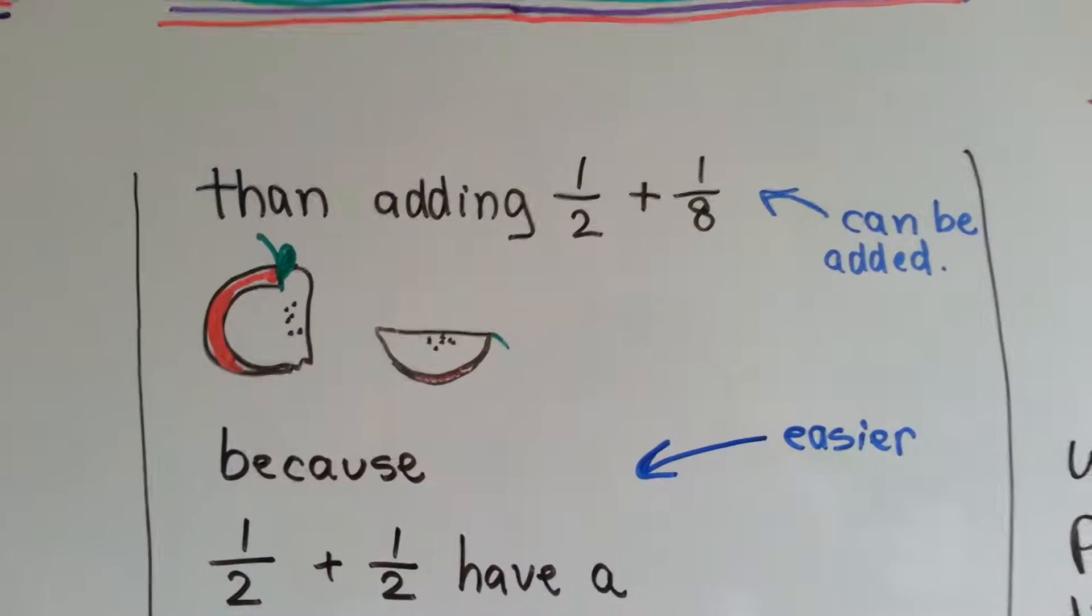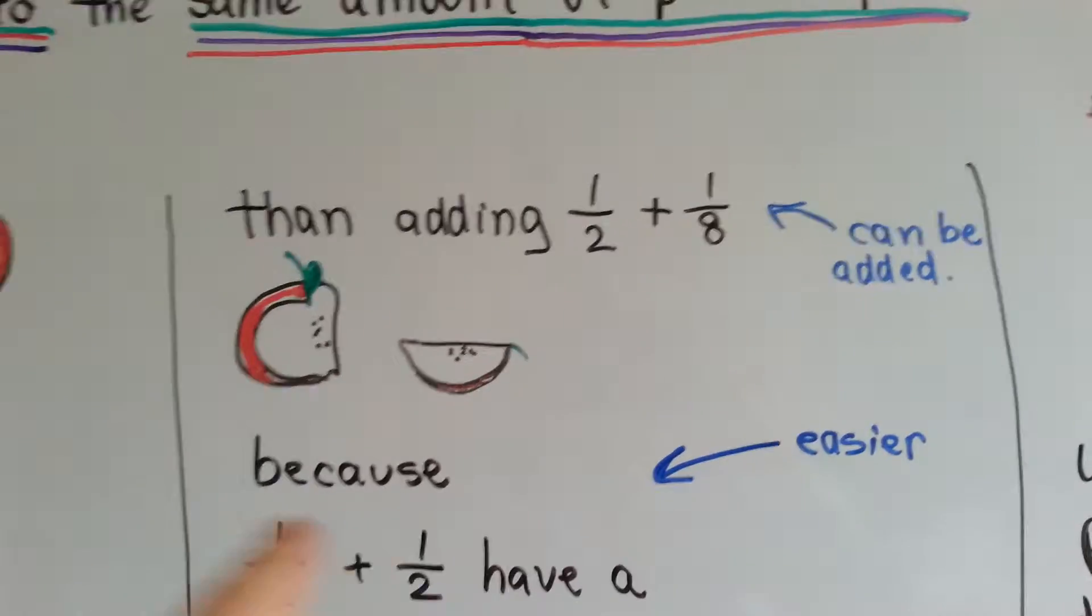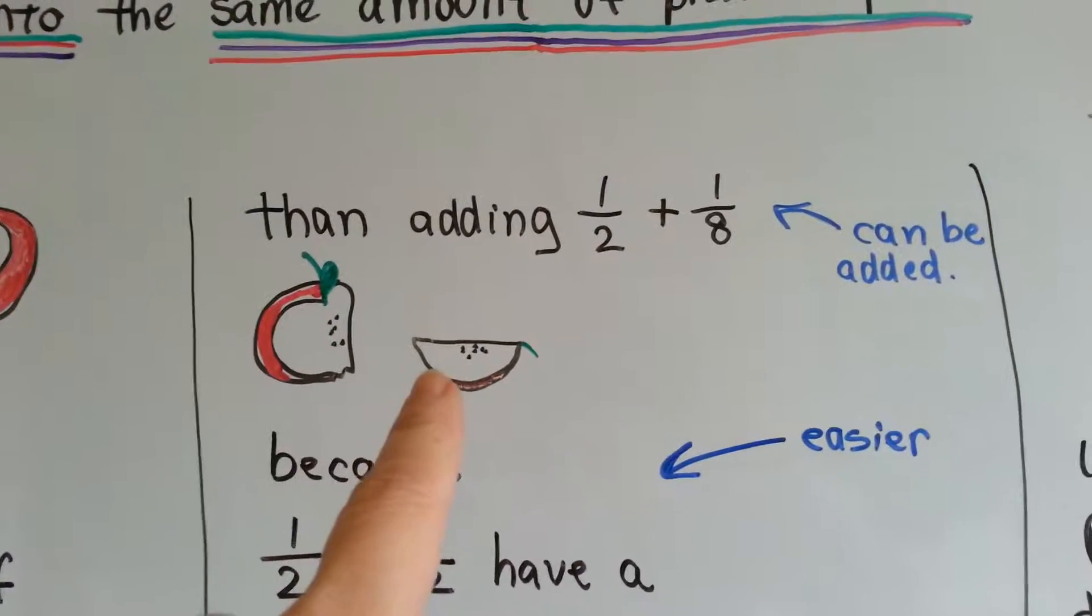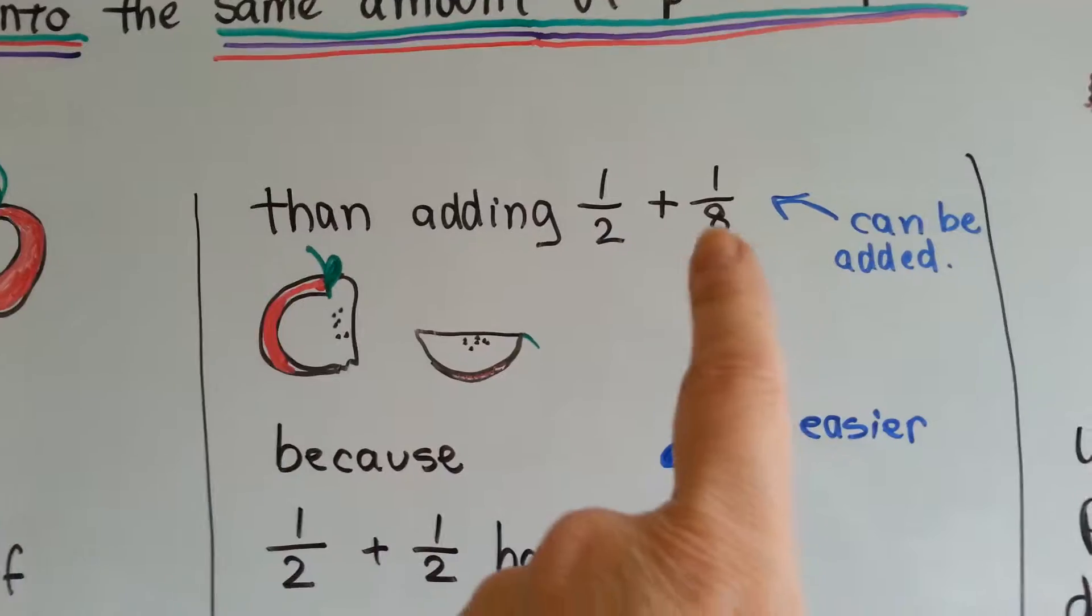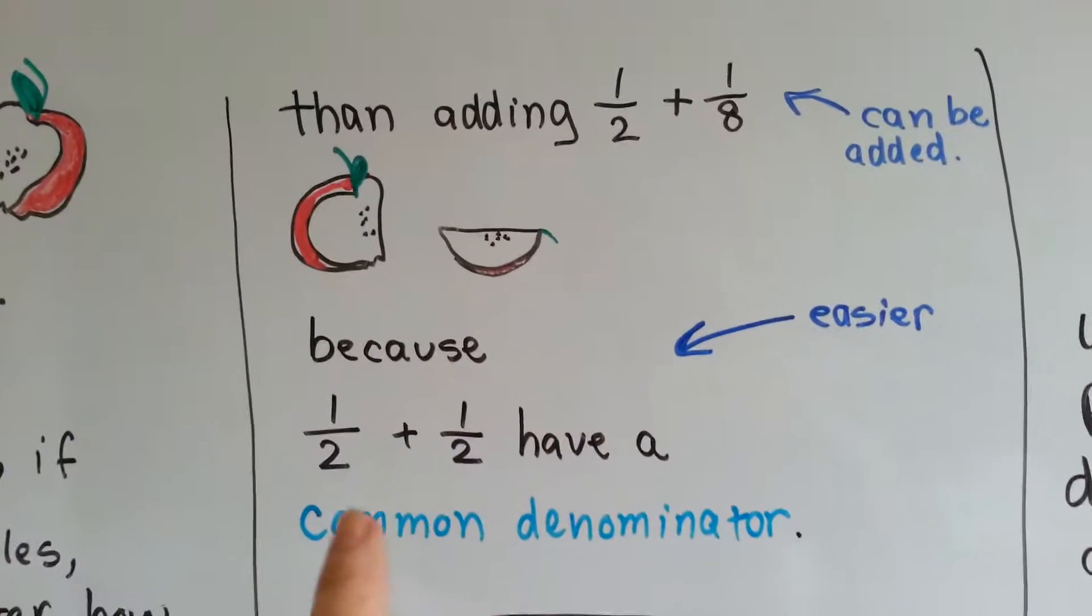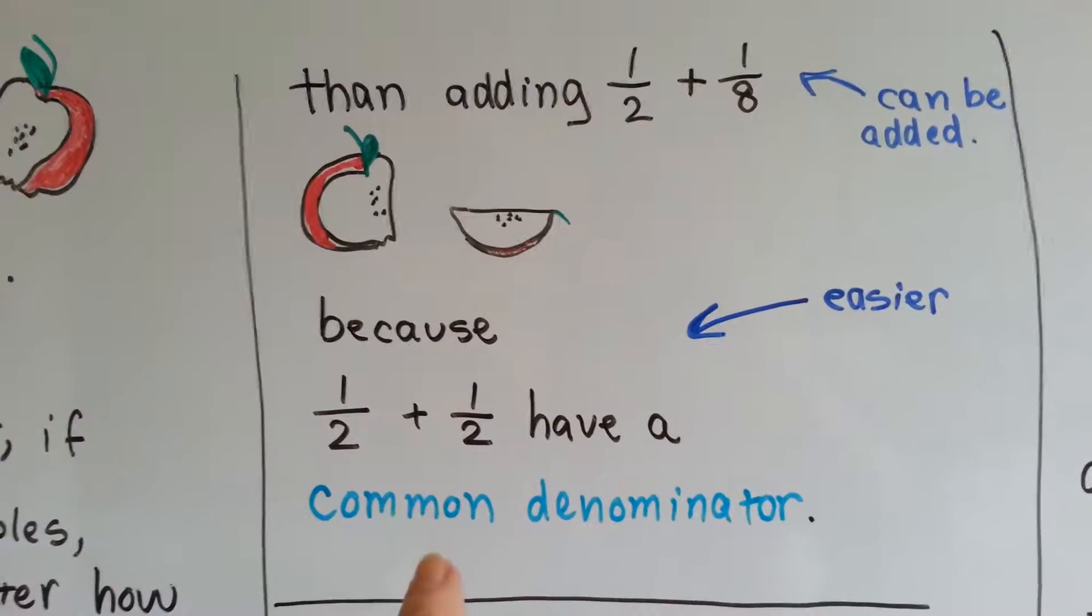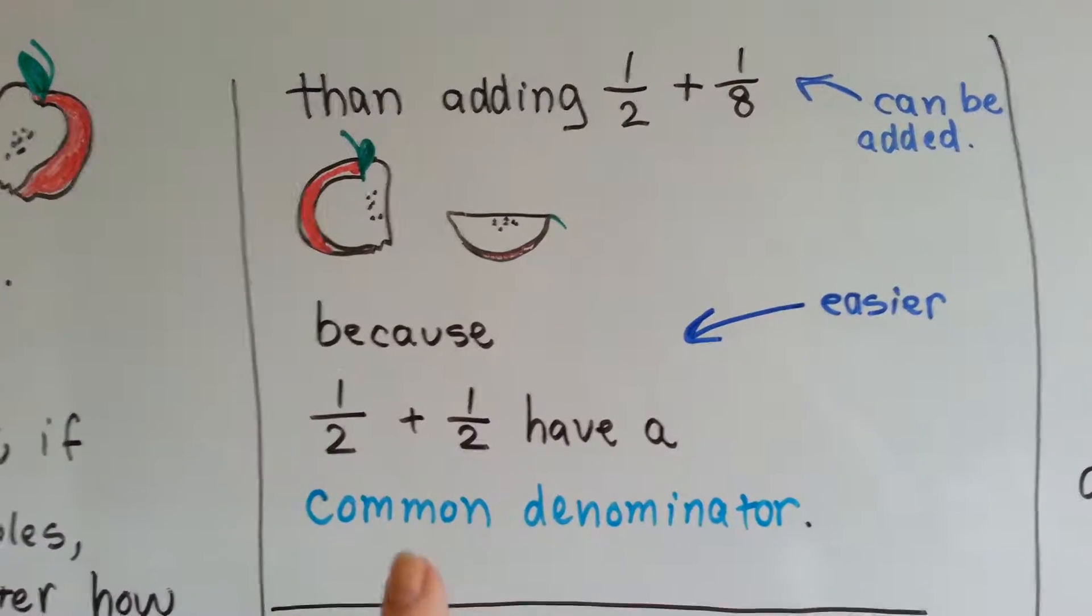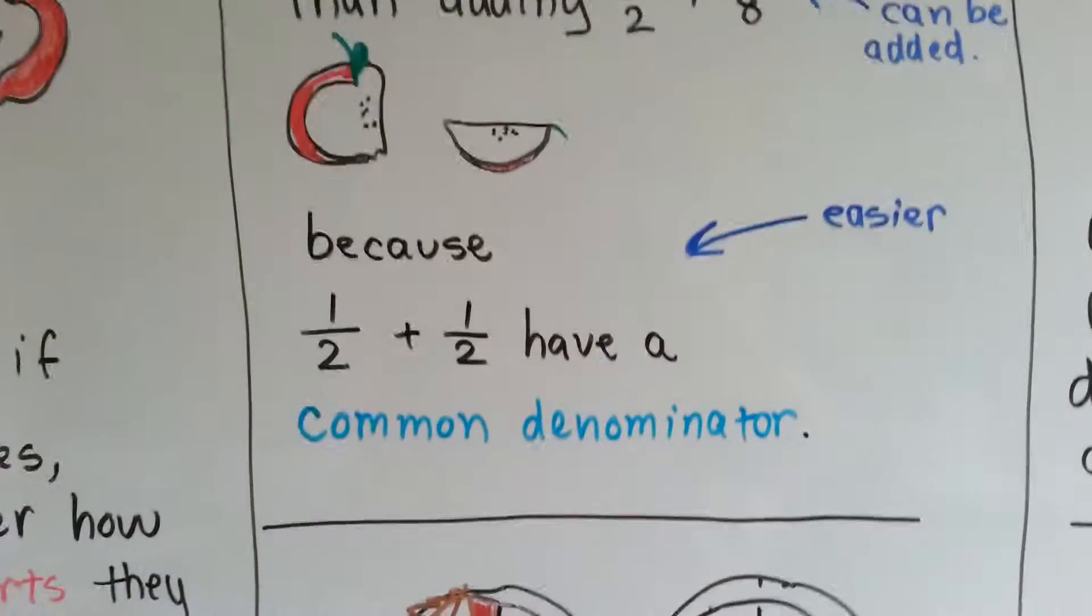It's easier than adding half of an apple to an eighth of an apple. You can add these together, it's just that this is easier because they have a common denominator. A half plus a half is easier because the denominators are the same.